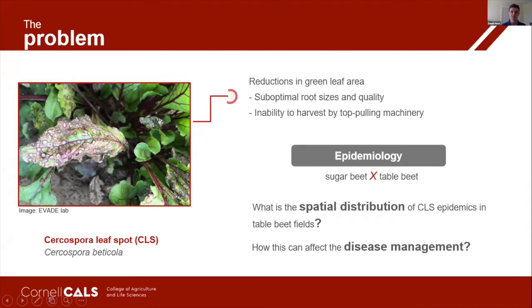In sugar beet, it is well described that conidia are locally dispersed within fields through wind and rain. However, little is known about the long-distance dispersal of the inoculum, and also how this dispersion occurs in table beet fields regarding the different management systems and spacing.